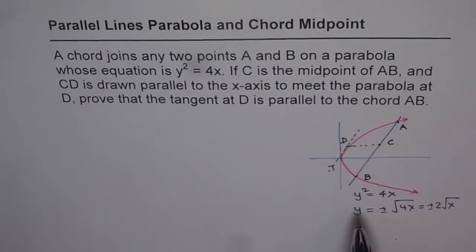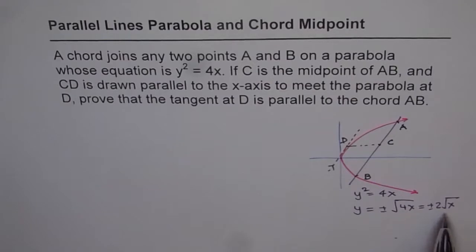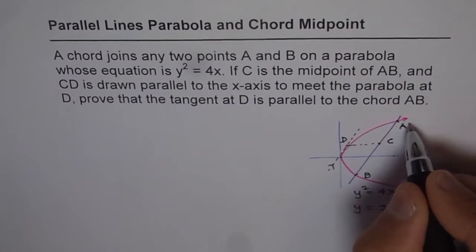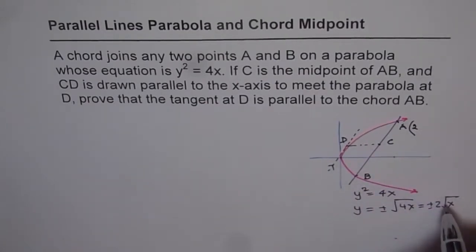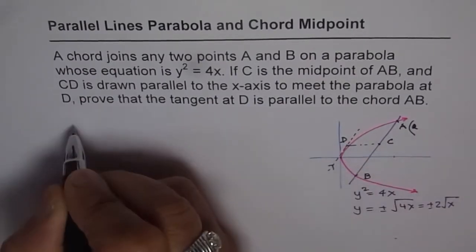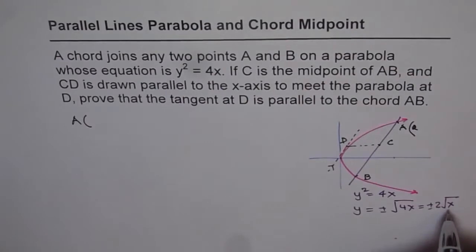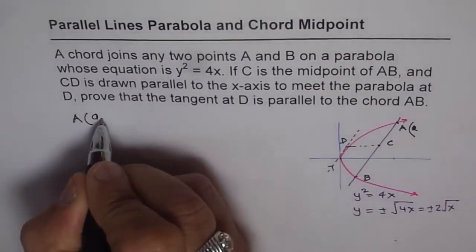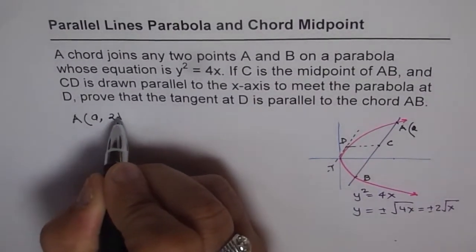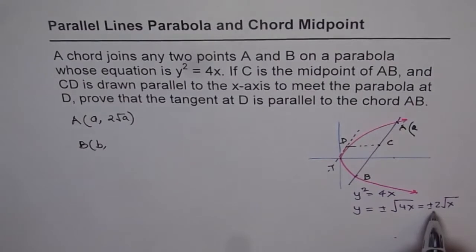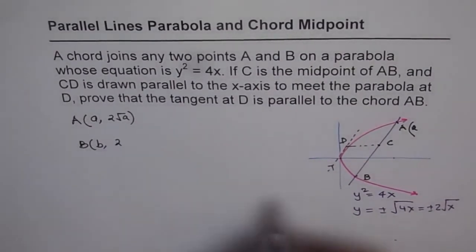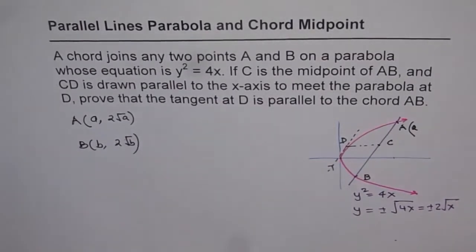We are given a parabola y squared equals 4x, so y equals plus or minus 2 square root of x. Let us say point A has x-coordinate A. We are assuming this to be on the positive side, so the coordinates for A will be (A, 2 square root of A). For point B, let us say the x-value is B, then the y-coordinate will be 2 square root of B. We are taking positive y-values at present.